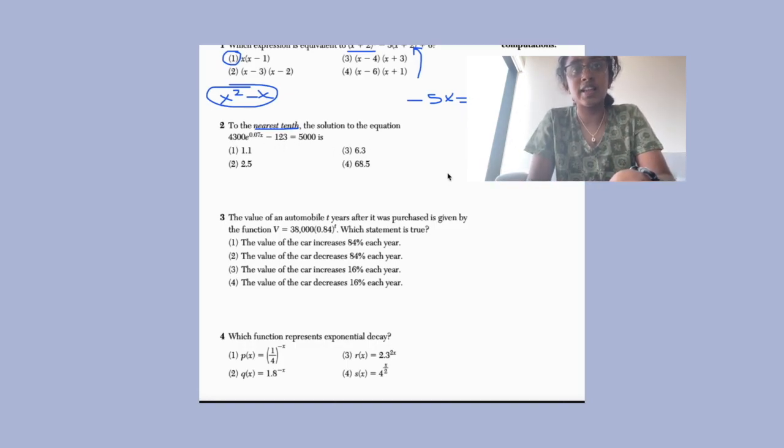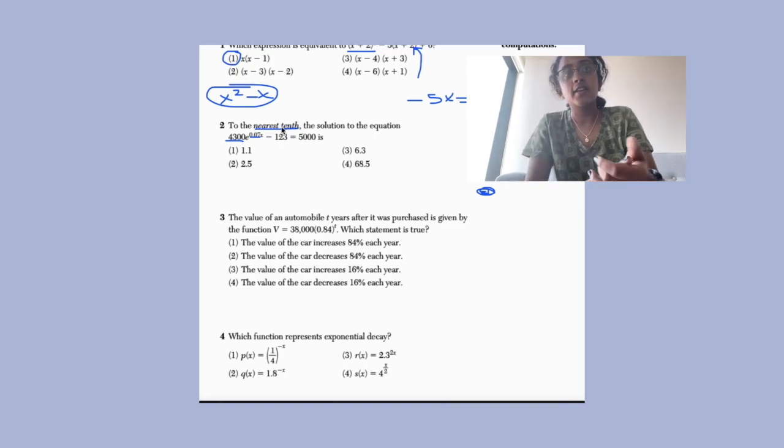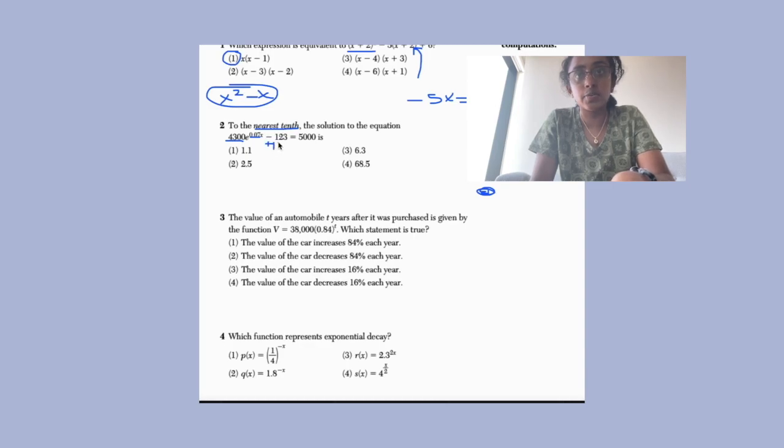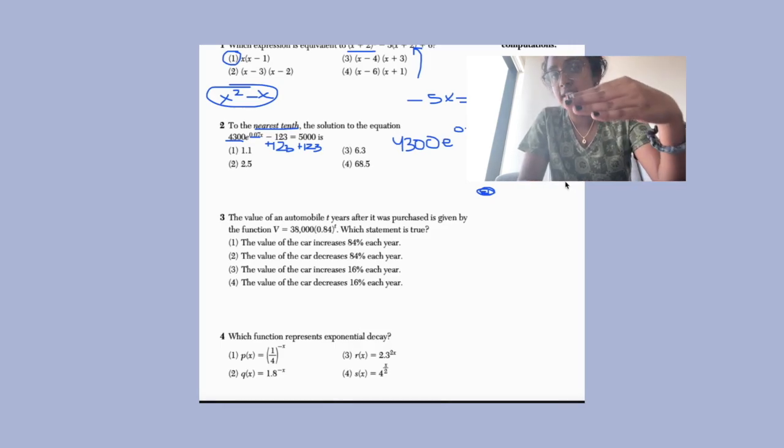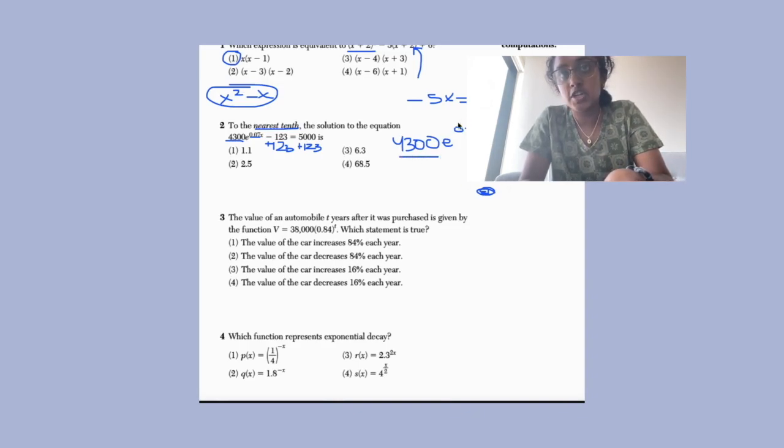And so whatever order of operations you see that is towards the end, you would have to do that first. And then you would have to perform the operation that cancels it out. So when we scan this, we have a multiplication, we have an exponent, we have subtraction, and subtraction is to the lowest. It has the least priority. So whenever we have to reverse it, we would do this first, and we would do addition. So we have 123 plus 123 on both sides. So then we would have 4,300e^(0.07x) equals 5,123. Now let's look at this again. Order of operations in reverse. What is the one that is towards the end? The next, the one we see here is multiplication and exponent. Multiplication comes after exponent. So we would deal with this one. And what is the opposite of multiplication? Division. Let's divide 4,300.